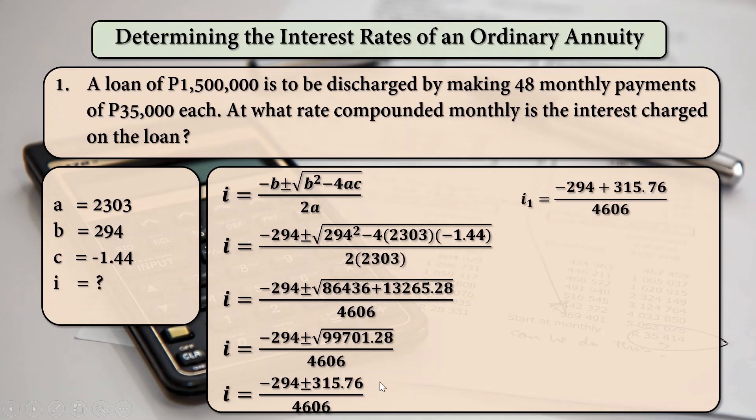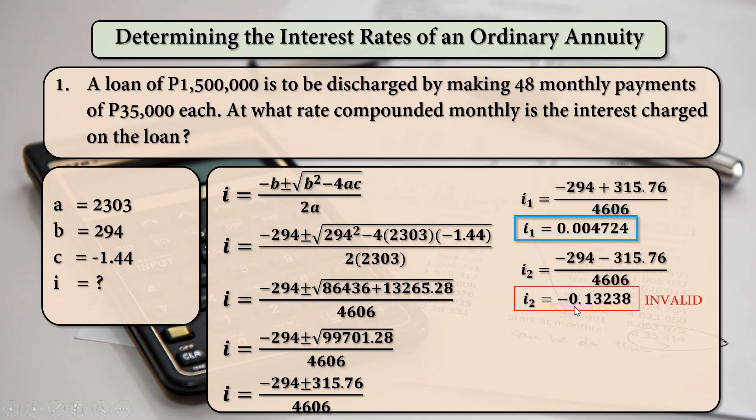And then we are going to solve for i1 using the plus sign. So, that is negative 294 plus 315.76 all over 4,606. And the result will be 0.004724. And for i2, we are going to use the minus sign. So, negative 294 minus 315.76 that will be equal to negative 0.13238 which is considered invalid because it has a negative sign.